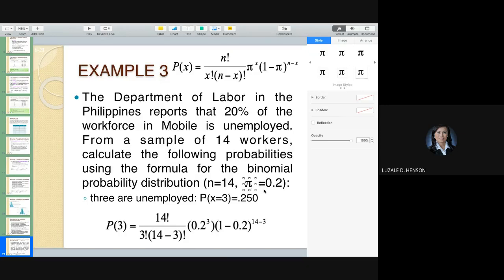Our concern is the probability that three are unemployed out of these 14 workers. You're given this probability of success, 20% are unemployed. So what is the probability that three are unemployed? You're going to compute: 14 factorial divided by 3 factorial, because that is your x, multiplied with 14 minus 3 factorial, then multiplied by the probability of success raised to x, times 1 minus 0.2, which is the probability of failure, raised to 14 minus 3.